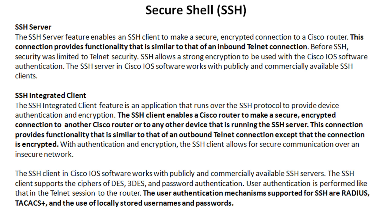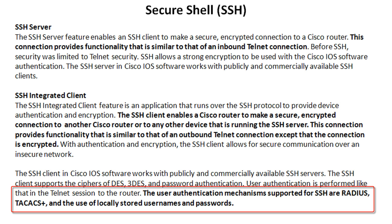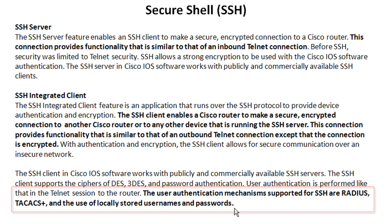The client enables a Cisco router to make a secure encrypted connection to another Cisco router or any other device running the SSH server. This connection provides functionality similar to an outbound Telnet connection, except that the connection is encrypted. When you think of SSH, think of Telnet but with encryption. The ciphers it supports are DES, Triple DES, and password authentication. The user authentication mechanisms supported for SSH are RADIUS, TACACS, and the use of locally stored usernames and passwords.